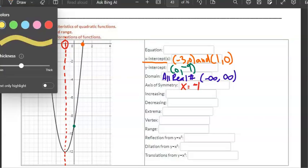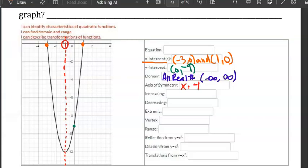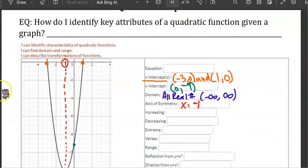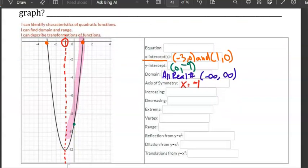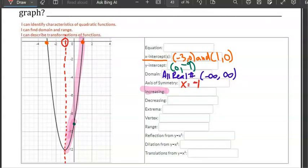It is increasing on the right side, so this is going to be at x is greater than negative 1, from negative 1 to infinity.